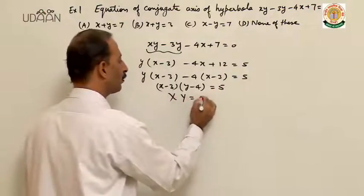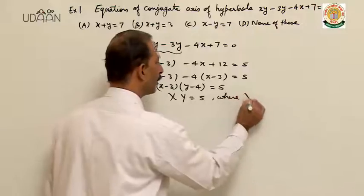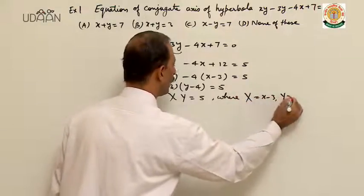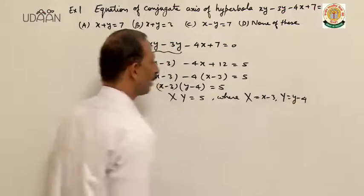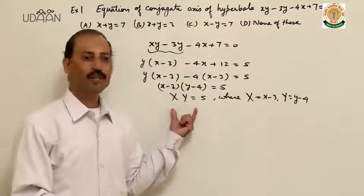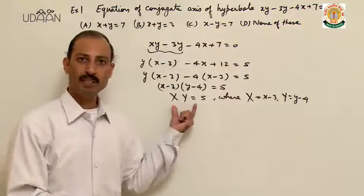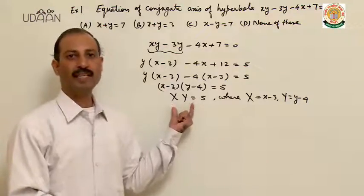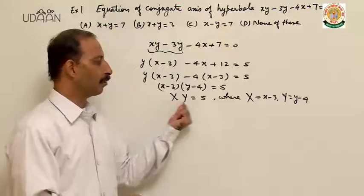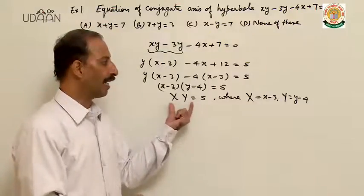So XY is equal to 5, where capital X is x minus 3 and capital Y is y minus 4. This is the equation XY equal to 5. Which equation is this? Rectangular hyperbola. So this is the XY equal to c square type form — rectangular hyperbola.